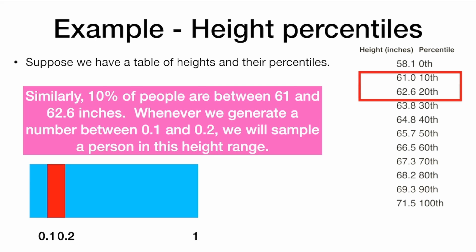Similarly, 10% of people are between 61 and 62.6 inches tall. Whenever we generate a number between 0.1 and 0.2, we will sample a person in this height range. Thus, each height range will be represented in proportion to how often they actually occur.